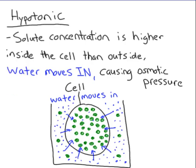We have some terms to describe these situations. When the solute concentration is higher inside the cell than outside, we call that hypotonic. Water is going to move into the cell, causing the cell to get really big and have a lot of pressure — we call that osmotic pressure. A student's mnemonic: when you hear 'hypo,' think 'hippo.' Hippos are really big and large, and when a cell is in a hypotonic solution, it's going to get really big because there are more solutes inside than outside.